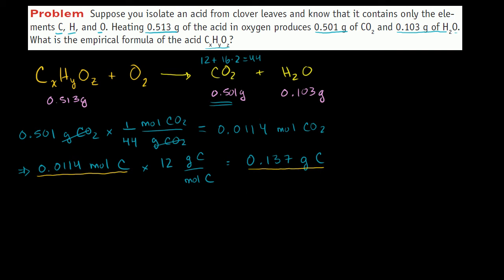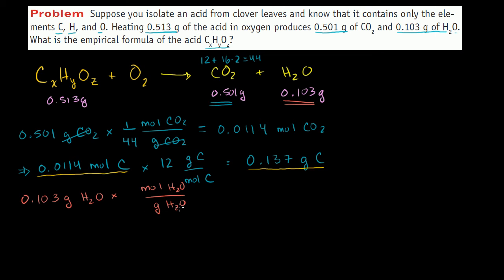Now let's do the same thing for hydrogen using the water data. We start with 0.103 grams of water and multiply by moles of water per grams of water to cancel the grams. The molar mass of water is two hydrogens (2×1) plus oxygen (16), which equals 18. So one mole of water has 18 grams. We get 0.103 divided by 18 moles of water.